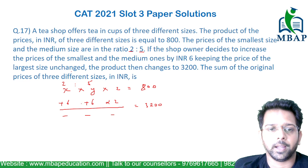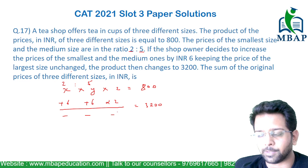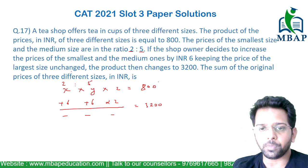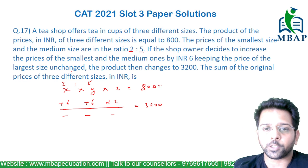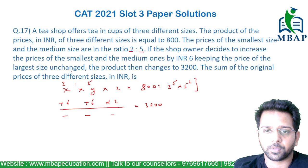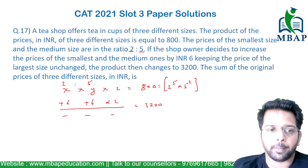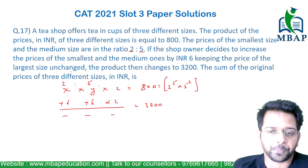You have to find the value of x + y + z. Once you factorize 800 you will find the value as 2 raised to 5 into 5 raised to 2. So I just have to plug and play 2 raised to 5 and 5 raised to 2 among x, y, and z to make it equal to 800.